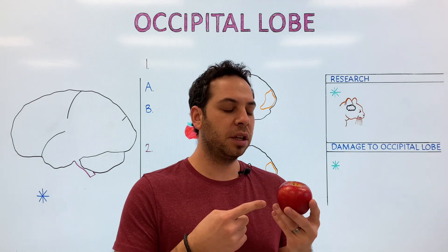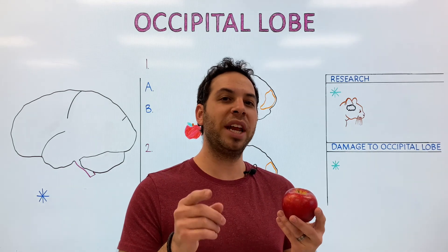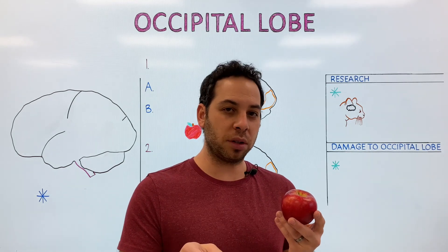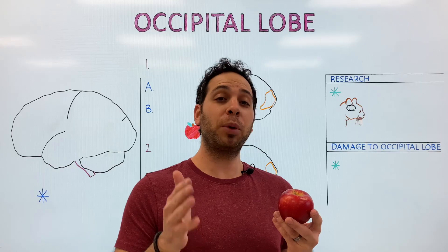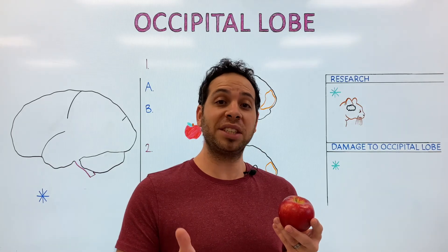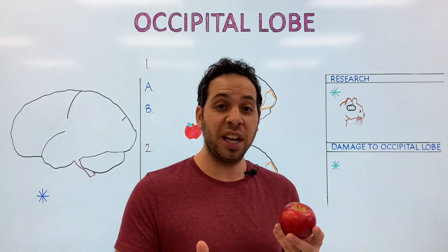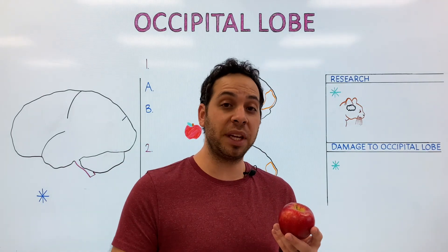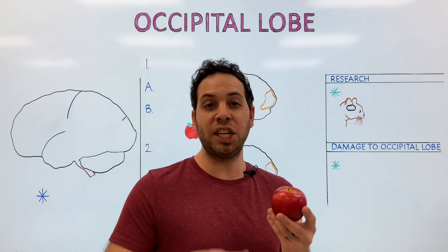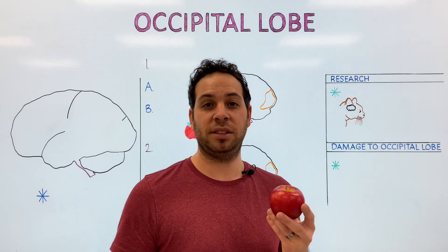When you look at this object, I'm guessing your brain is thinking 'Apple,' right? The human brain is so quick to process information, it's almost as if the moment we look at something, we immediately know what it is.